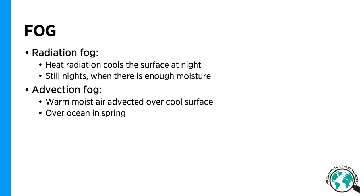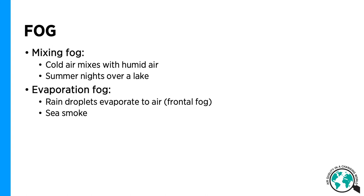Fog is condensed water in the air close to the ground. Fog can form when heat radiation cools the surface at night in still nights when the air is moist enough. Fog can also be formed when warm, moist air is advected over a cool surface, like over the ocean in spring. Or when cold air mixes with humid air, like on summer nights over a lake.